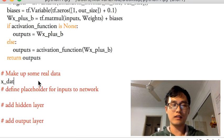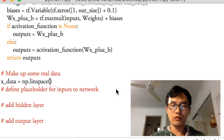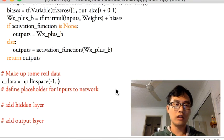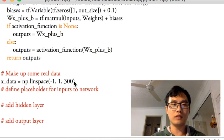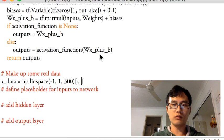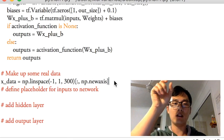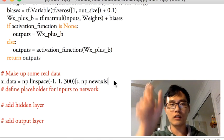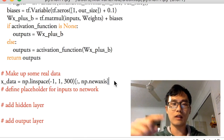For example, x_data equals numpy.linspace. This one is to make up some data from -1 to 1, and I will make 300 samples, and add one dimension to this sample with newaxis. To add this one dimension to the sample, so that is one column, just one column, 300 samples, one column.